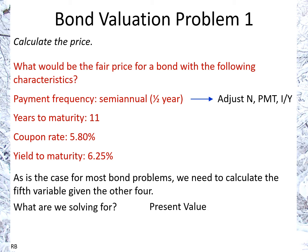We're going to start by calculating N. N is the number of payments. If we have 11 years to maturity but semiannual payments, that means we have 11 years times 2 payments per year, which equals 22.